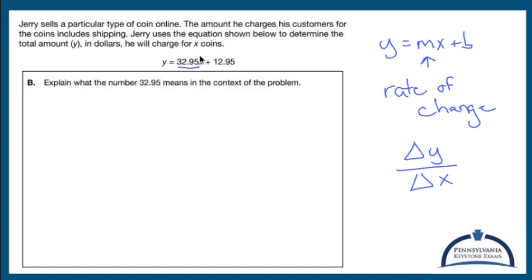So if X was one, that would be a change of $32.75 per coin. So explain what that number means in the context of this problem. $32.95 per coin sold.